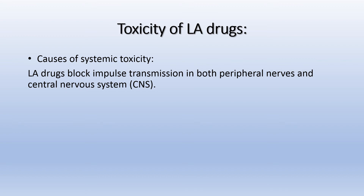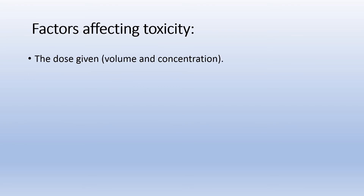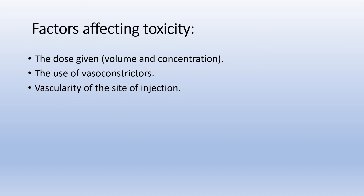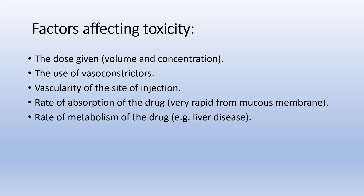Toxicity of local anesthetic drugs: systemic toxicity occurs when local anesthetic drugs block impulse transmission in both peripheral nerves and the central nervous system. Factors affecting toxicity include: the dose, volume, and concentration of the drug; the use of a vasoconstrictor; the vascularity of the injection site; the rate of absorption (very rapid from mucous membranes); the rate of metabolism (affected by liver disease); and hypersensitivity of the patient.